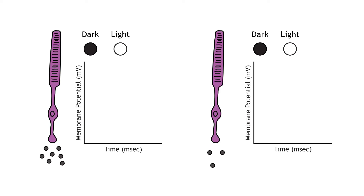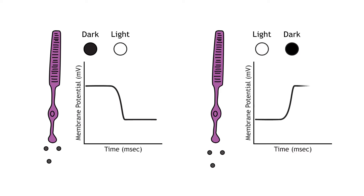Photoreceptors do not fire action potentials. They respond to light changes with graded receptor potentials, meaning depolarization or hyperpolarization. Despite this, the photoreceptors still release glutamate onto the bipolar cells. When moving from dark to light, the photoreceptor will hyperpolarize and glutamate release will decrease. When moving from light to dark, the photoreceptor will depolarize and glutamate release will increase.